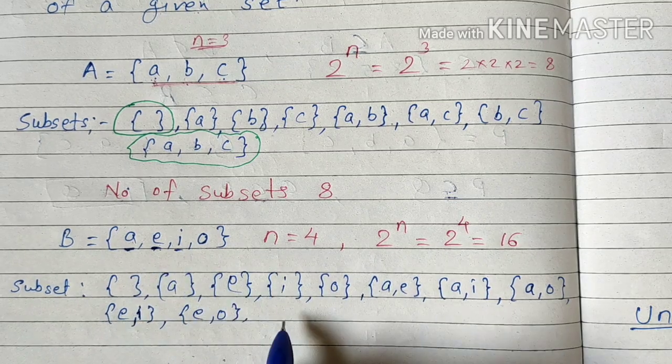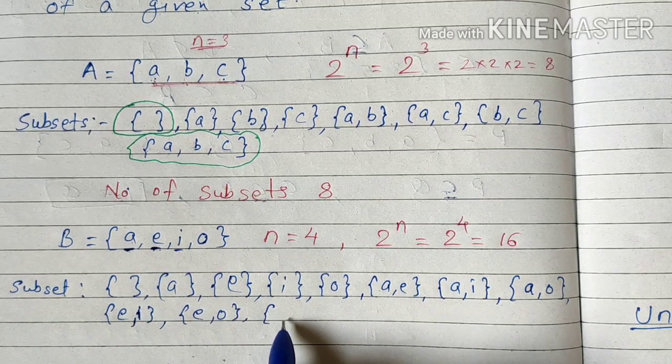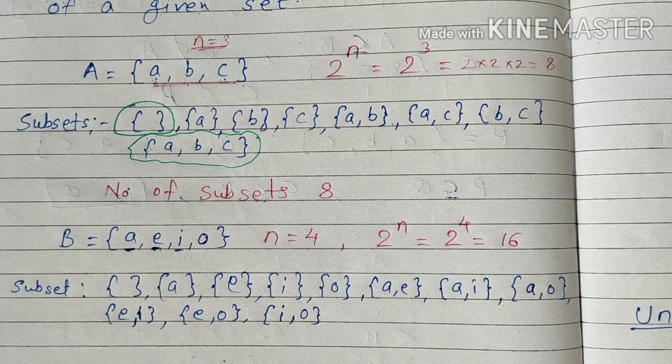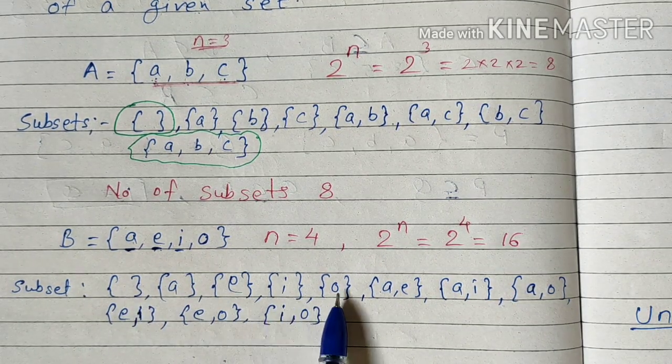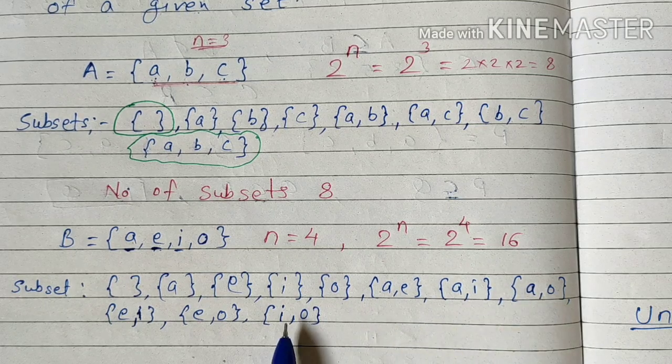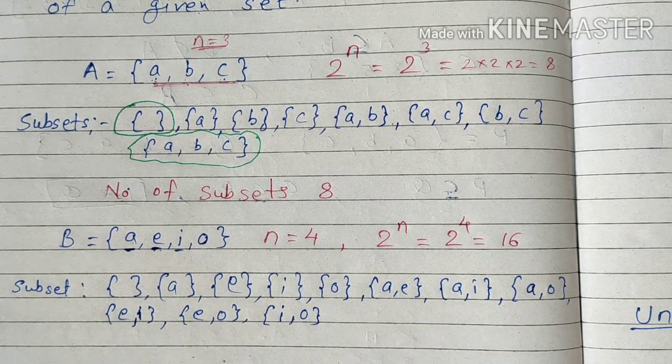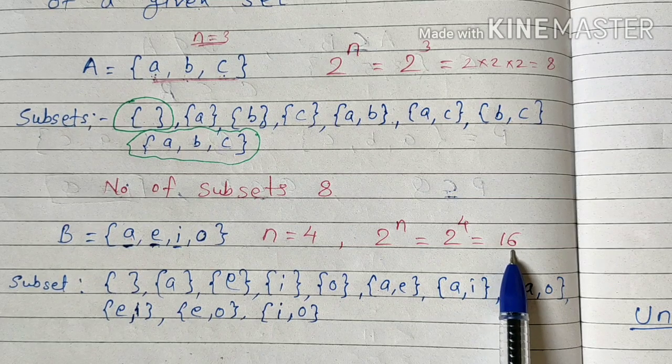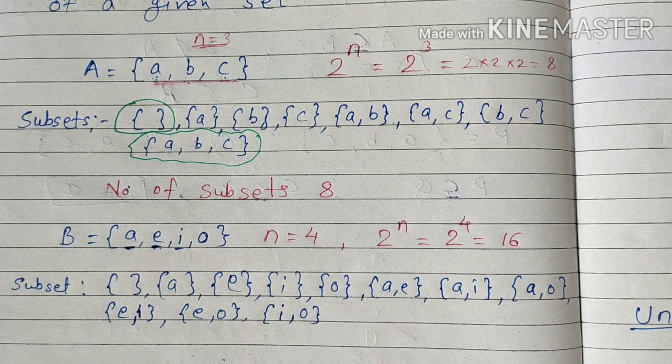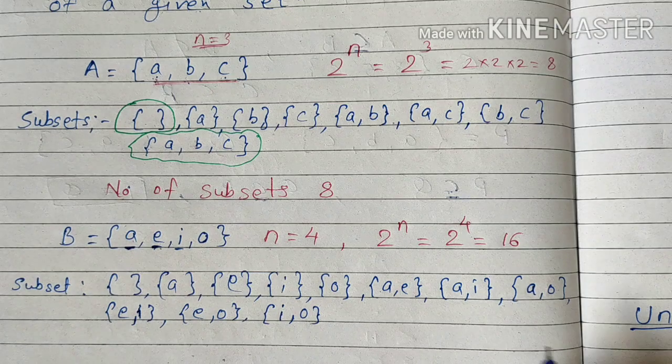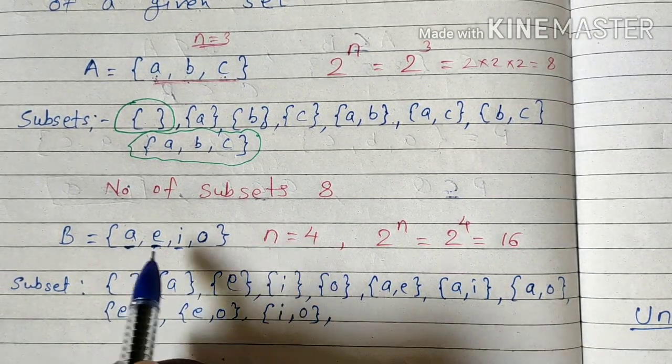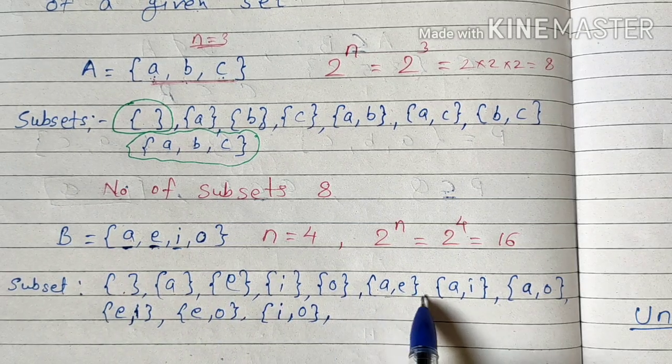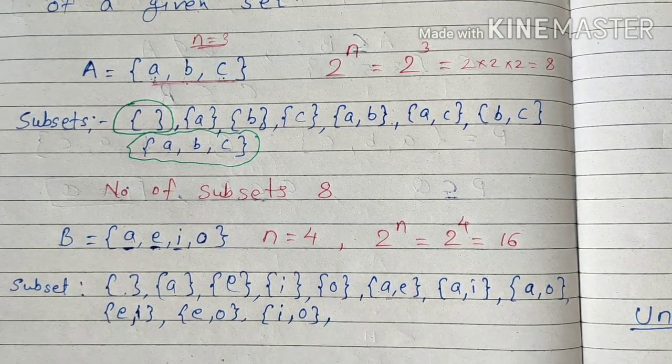Combination of i, that is {i,o}. See how many we have done: one, two, three, four, five, six, seven, eight, nine, ten, eleven. Total there must be sixteen. We have done eleven, meaning five remaining sets we have to write. So here we have done single elements, then two-two elements. Now we will make a group of three.